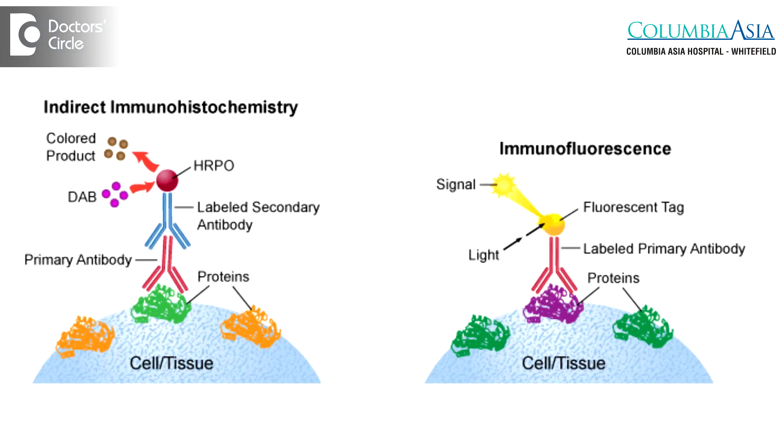Immunochemistry is a specialized test that uses the principle of an antigen antibody reaction. Many cells in the tissues — almost all cells in the tissues — express or contain specific antigens, and if you can identify these antigens, it is easier to make a diagnosis of a particular lesion, to subtype a tumor, or to even provide important prognostic information to the surgeon. So, immunochemistry is very useful in doing all these things.